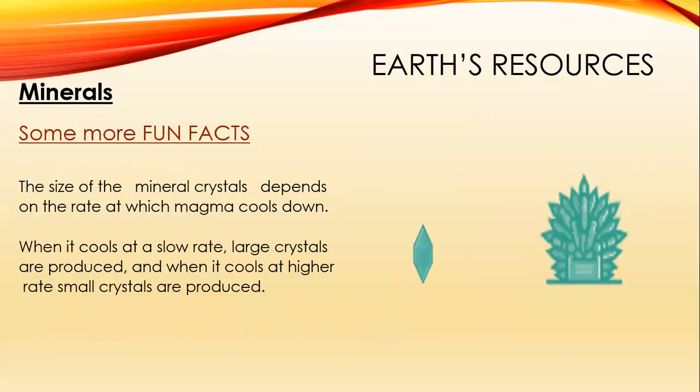Here are some more fun facts. The size of mineral crystals depends on the rate at which magma cools down. When it cools at a slow rate, large crystals are produced. But when it cools at a higher rate — meaning it cools faster — the crystals that are formed are small-sized. Here you can see two different crystals: one is smaller and another one is bigger.